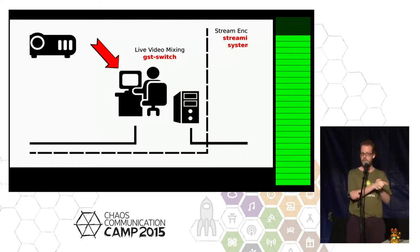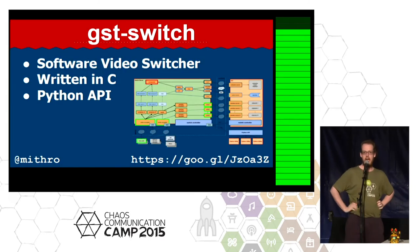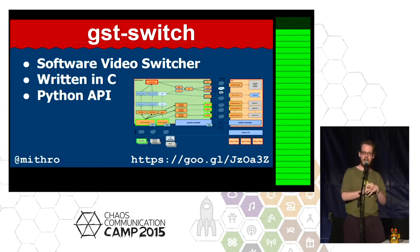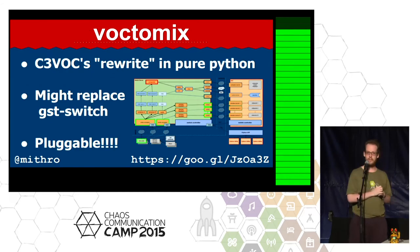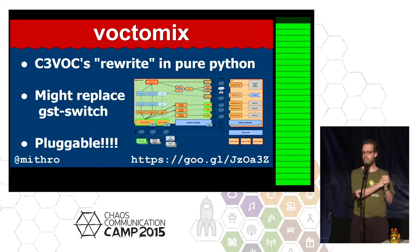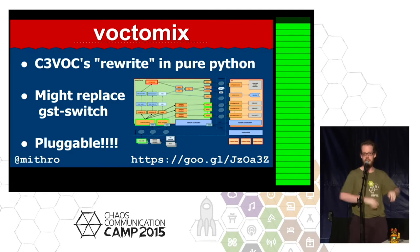It's this bit here — it sits on the computer up the back. It's written in C. The CCC guys didn't like that it was written in C, so they rewrote it in Python. We are now seeing whether we can use that instead — so that's Voctomix.